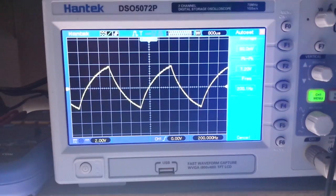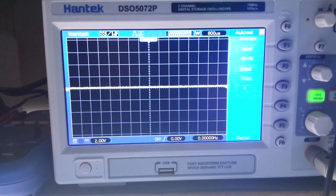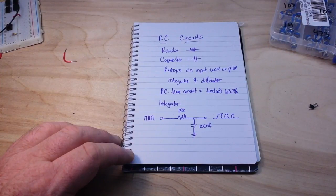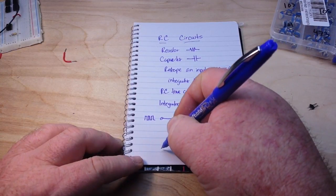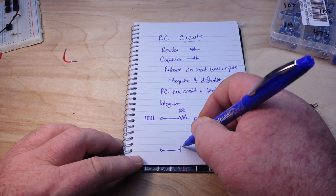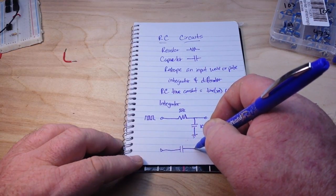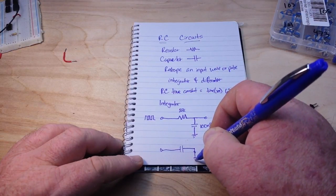Let me disconnect this and we will switch over to our next circuit, the differentiator. Our differentiator circuit looks remarkably like our integrator, except it's reversed.